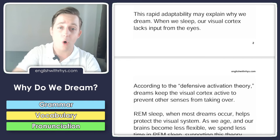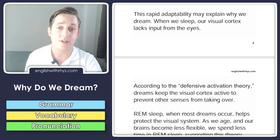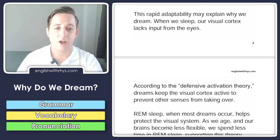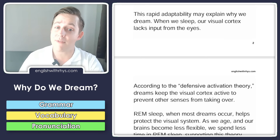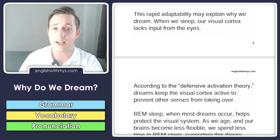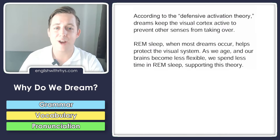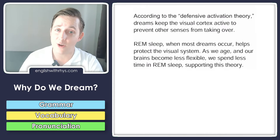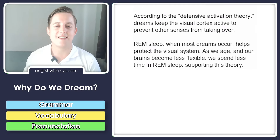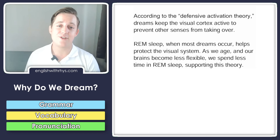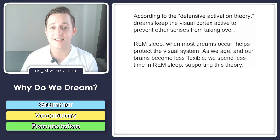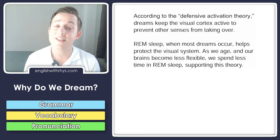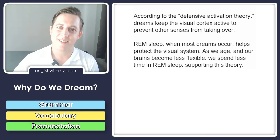Studies with blindfolded participants revealed that the brain's visual regions could quickly start processing touch and sound. This rapid adaptability may explain why we dream. When we sleep, our visual cortex lacks input from the eyes. According to defensive activation theory, dreams keep the visual cortex active to prevent other senses from taking over. REM sleep, when most dreams occur, helps protect the visual system. As we age and our brains become less flexible, we spend less time in REM sleep, supporting this theory.